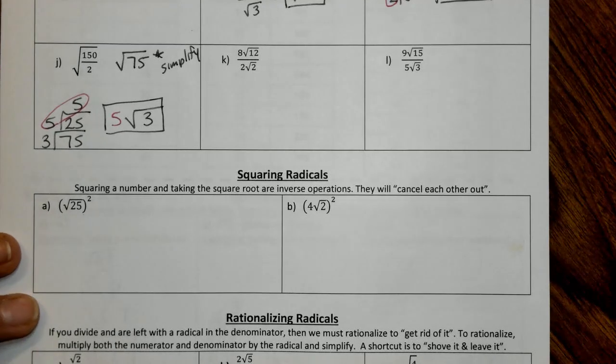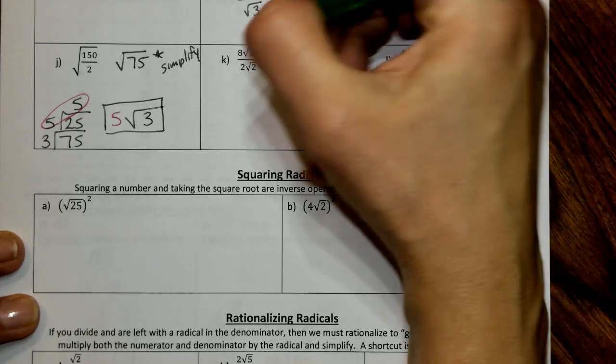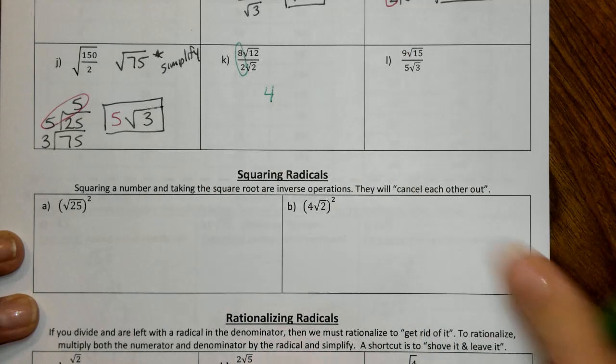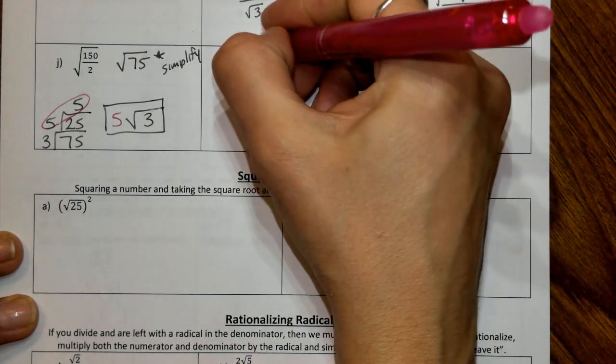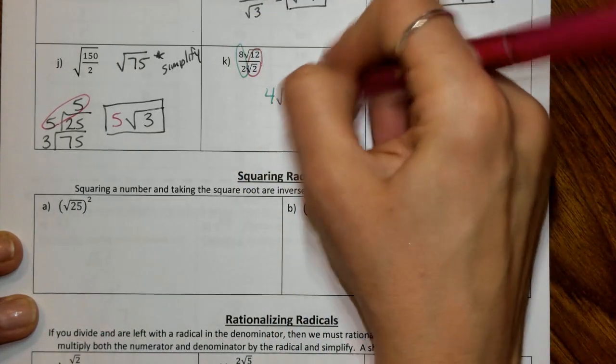So the next two are going to deal with having whole numbers as well. So this is your inside divided by inside, outside divided by outside. 8 divided by 2 will give you 4, and then 12 divided by 2 is going to give you 6.